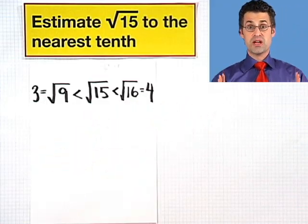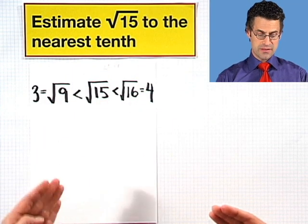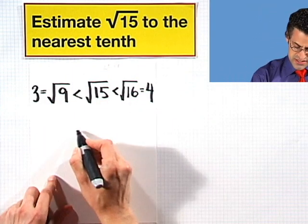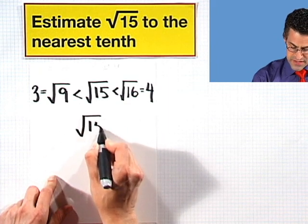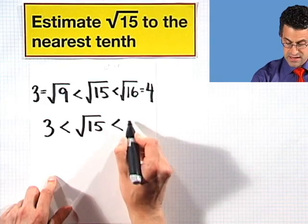So I've now sandwiched this mysterious real number in between two numbers that I'm more familiar with, namely 3 and 4. So I've just discovered that the square root of 15 is some quantity that's bigger than 3, but less than 4.